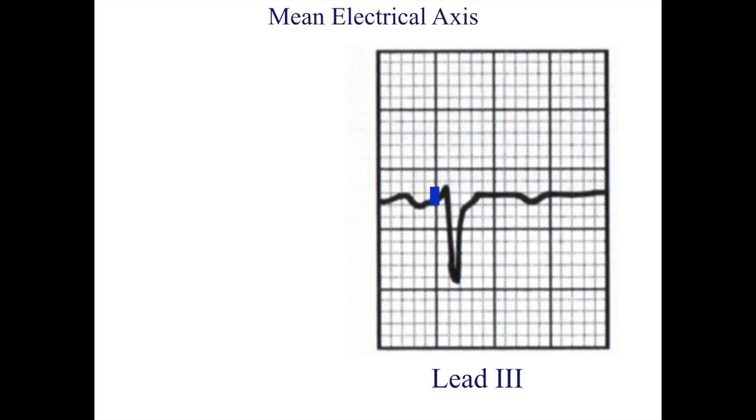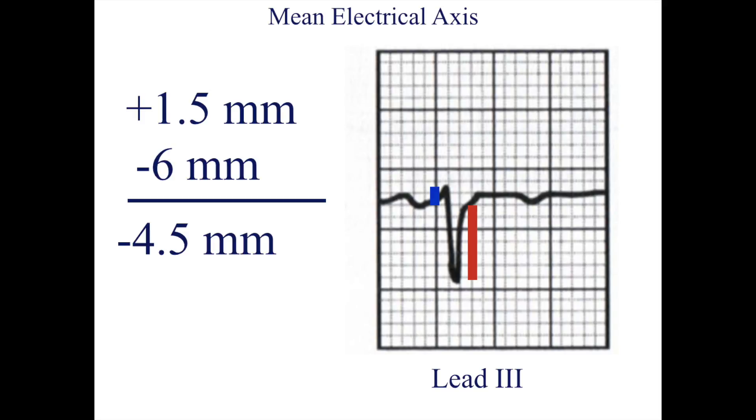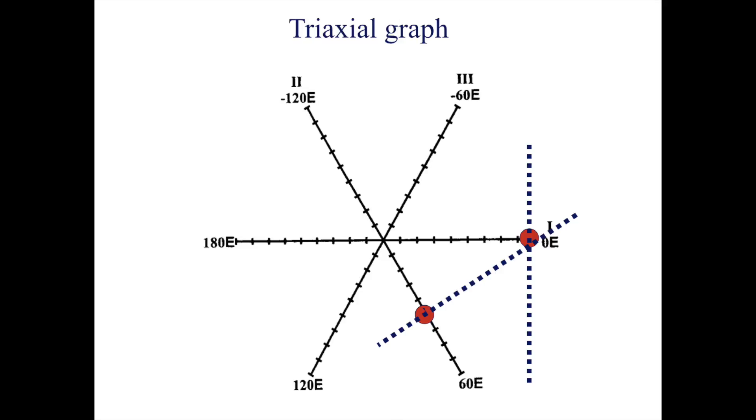Here the positive aspect is 1.5 above zero and the negative aspect is 6 below. This leaves us with a number of negative 4.5 to plot on the lead 3 axis. Again we draw a line perpendicular to the axis through the number. Notice that all of the lines intersect at one point. This intersection is the mean electrical axis and is reported in degrees. In this case it is zero degrees.